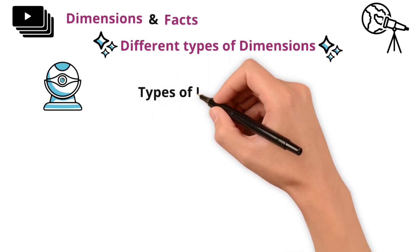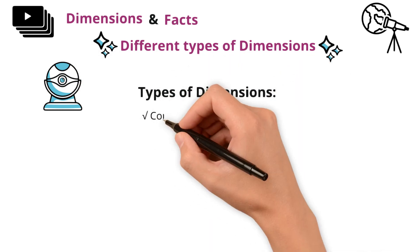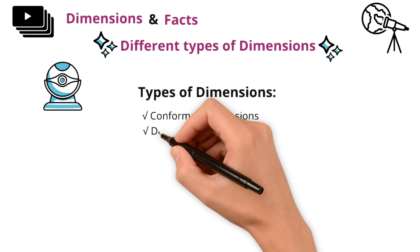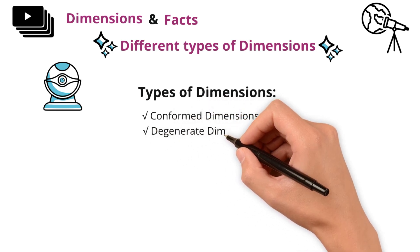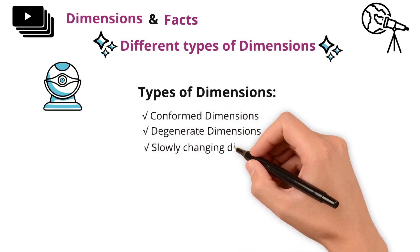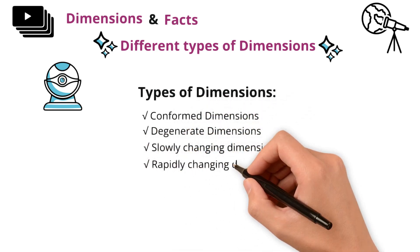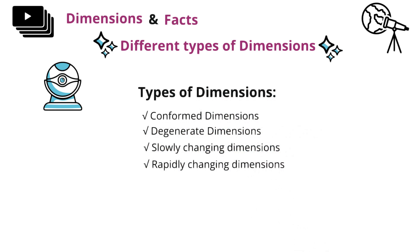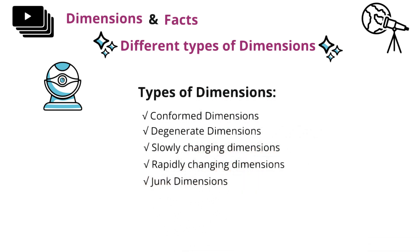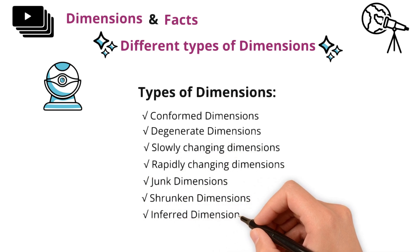Different types of dimensions are: conformed dimensions, degenerate dimensions, slowly changing dimensions, rapidly changing dimensions, junk dimensions, shrunken dimensions, and inferred dimensions.